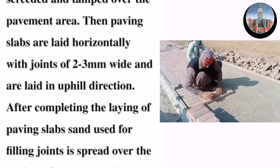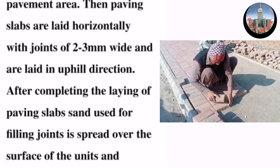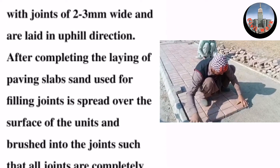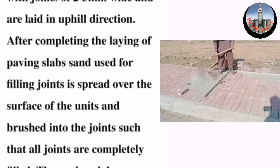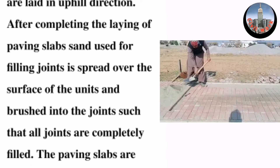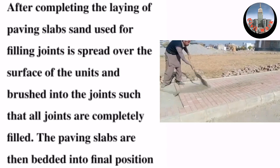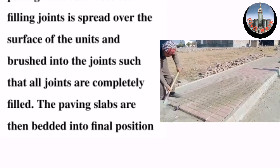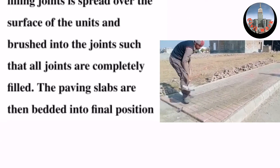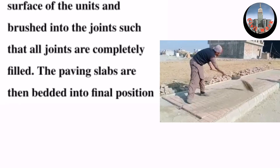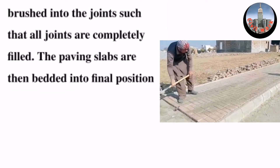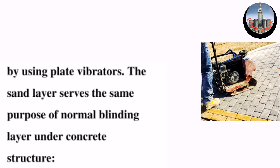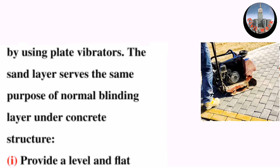Slabs are laid in an uphill direction after completing the length of paving slabs. Sand is spread over the surface of the units and pushed into the joints such that all joints are completely filled. The paving slabs are then bedded into final position by using plate vibrators.